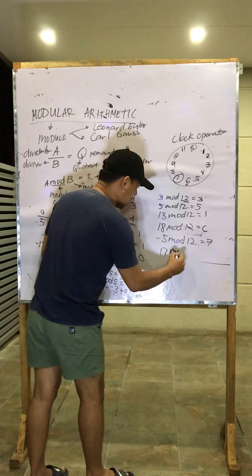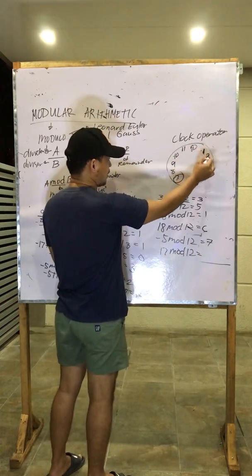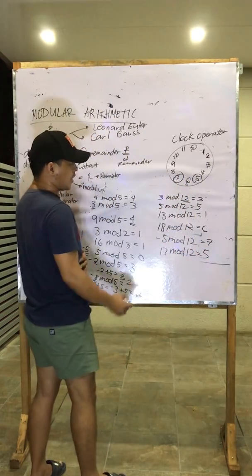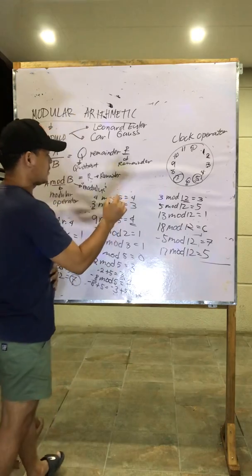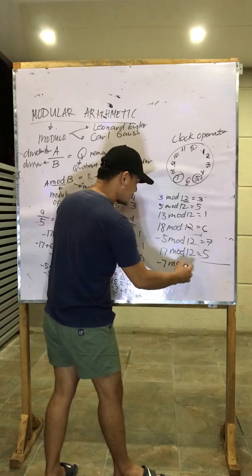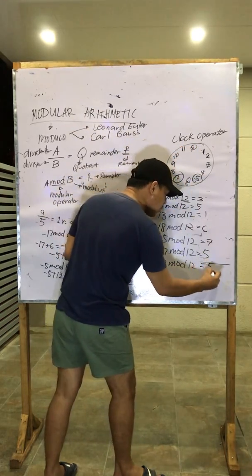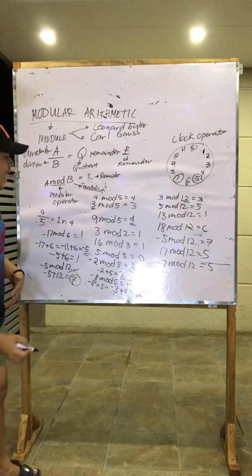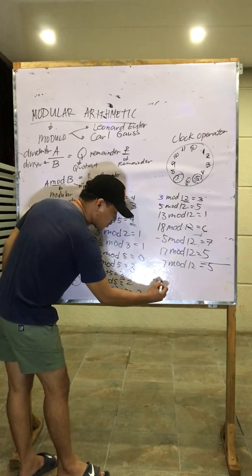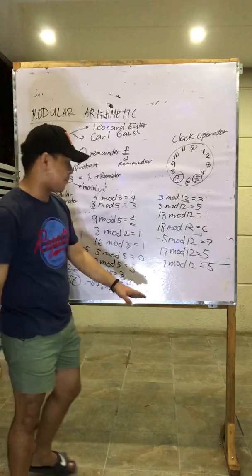17 mod 12: counting 12, 13, 14, 15, 16, 17 — the result is 5. And for negative 7 mod 12, counting counterclockwise 1, 2, 3, 4, 5, 6, 7 — the result is also equal to 5. From the arithmetic: negative 7 plus 12 is also equal to 5, which is already positive.